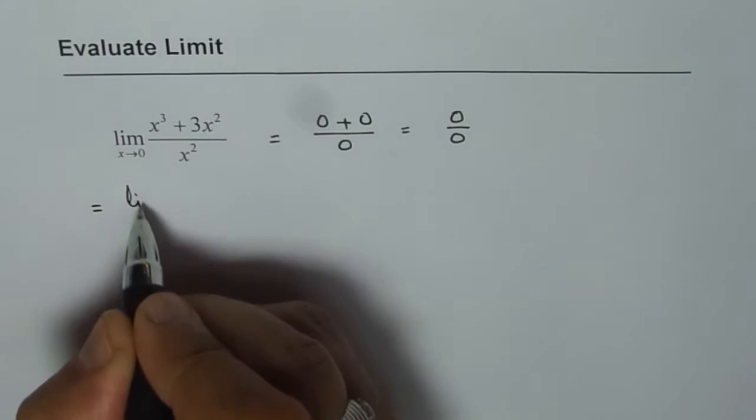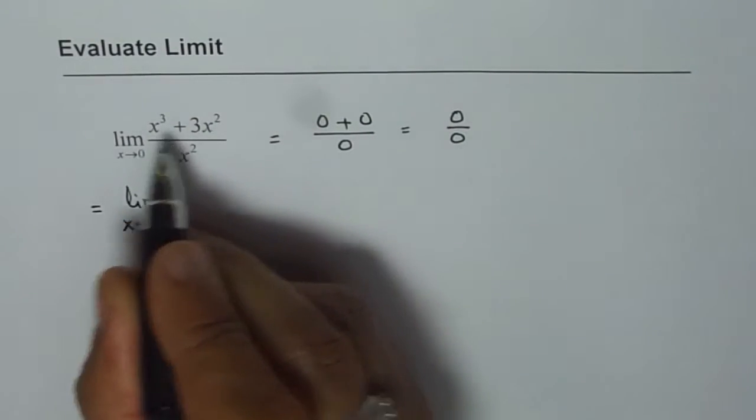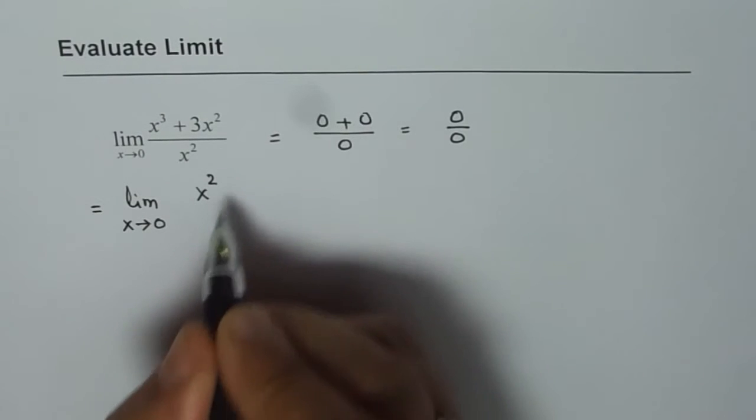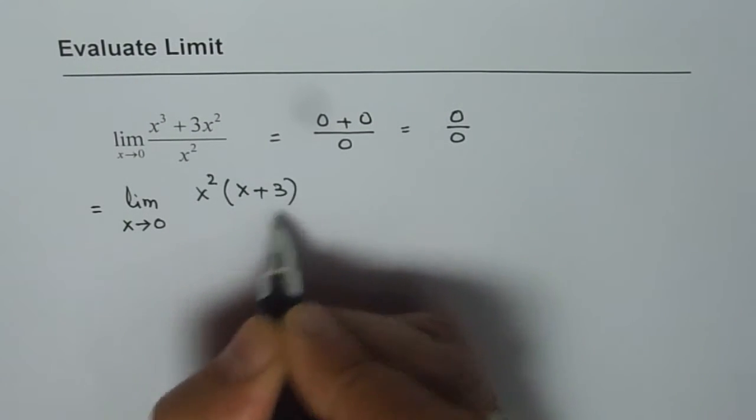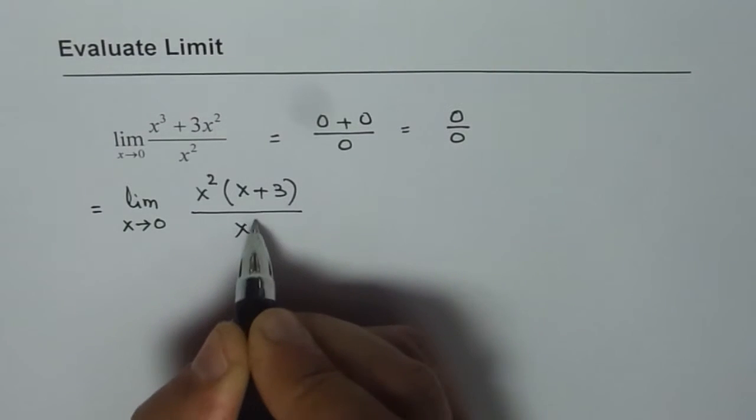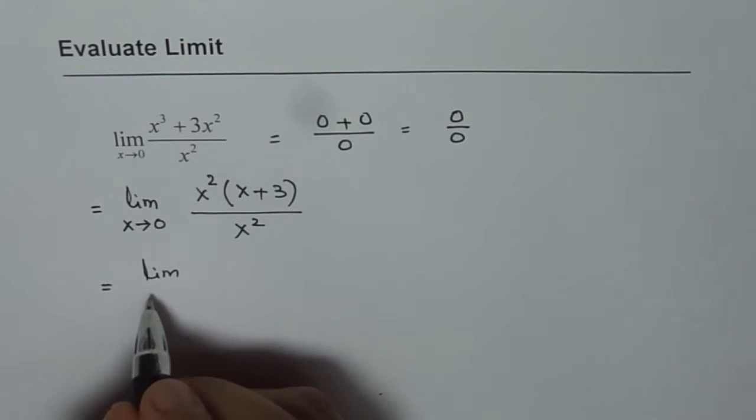So we can write this limit as limit x approaching 0, and x squared is a common factor. So let's write x squared, and then we are left with x plus 3 divided by x squared, right? Now here we can simplify it by crossing out x squared.